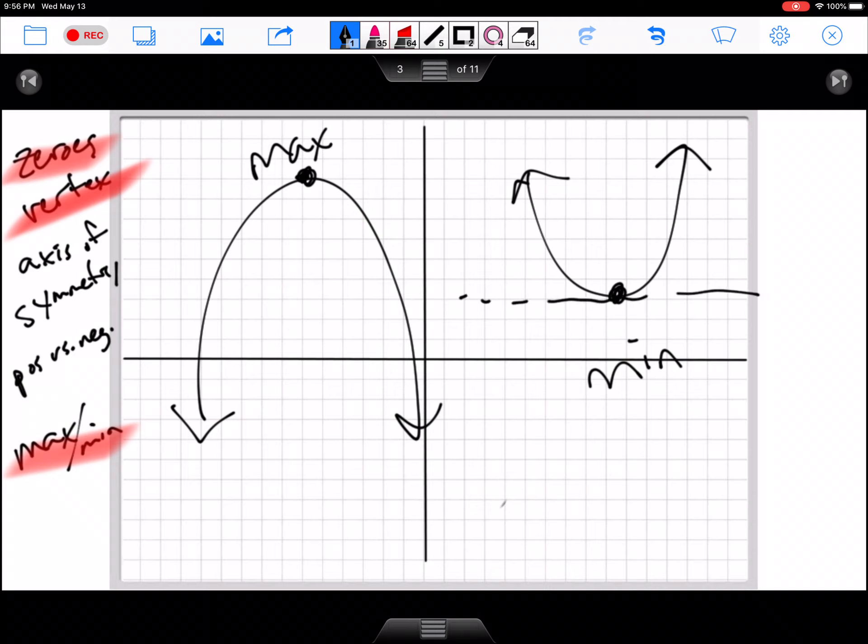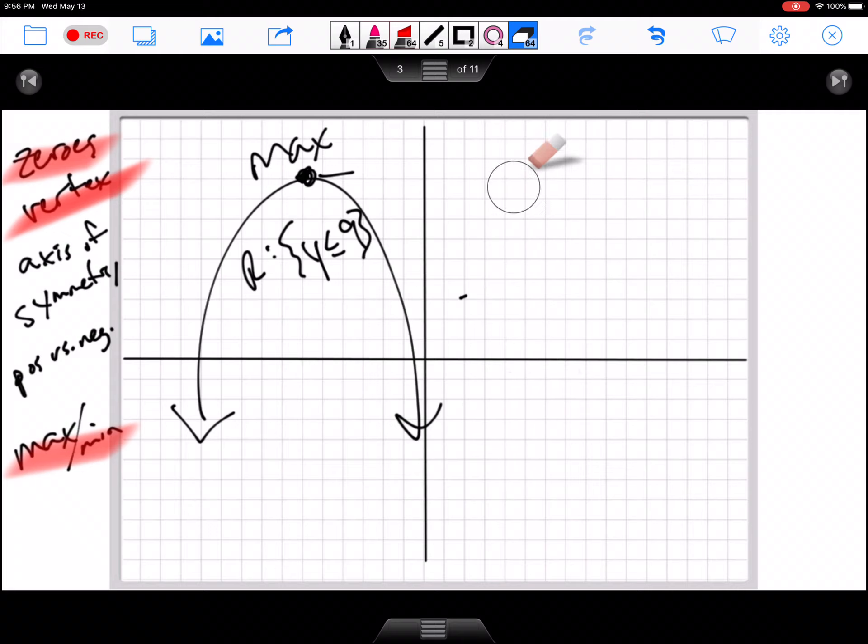So the vertex is always going to either be the highest or the lowest. And if you wanted to think about that domain and range stuff we did before, the range of this one would be y has to be less than or equal to whatever this is. 1, 2, 3, 4, 5, 6, 7, 8, 9 or so. And this one, y would have to be greater than or equal to 3. So if you remember that domain and range stuff, so that kind of shows us the maximum and the minimum of ours through the vertex. The vertex is that very center spot, maximum or minimum.